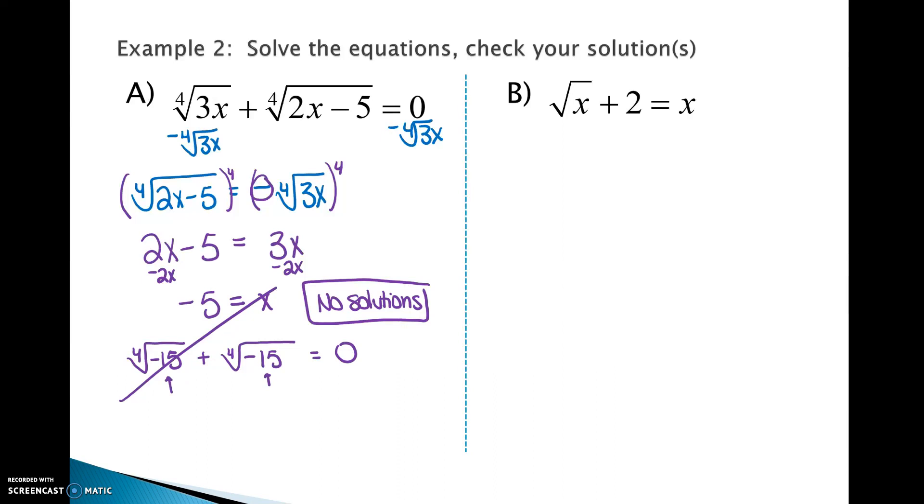In example B, our first step, when you see only one radical, you need to get that radical by itself. So how do we get rid of the plus 2? Subtract 2. So we will have the square root of x equals x minus 2. How do we undo a square root? Square it. And you have to square both sides. On the left, the square root of x squared is x. On the right, x minus 2 squared means x minus 2 times itself, which means we need to double distribute or FOIL or whatever term you use for multiplying binomials.